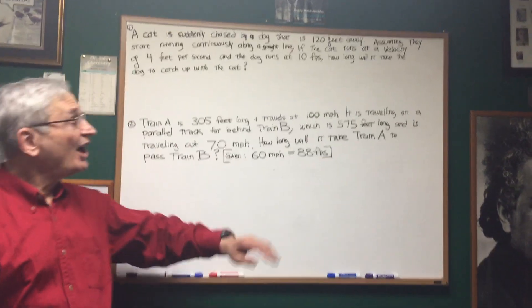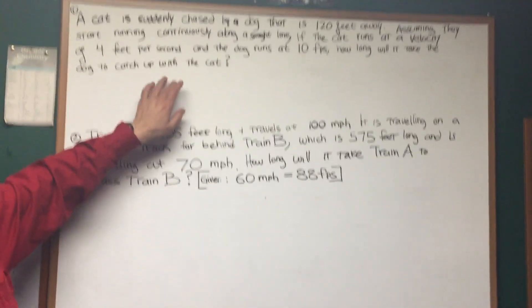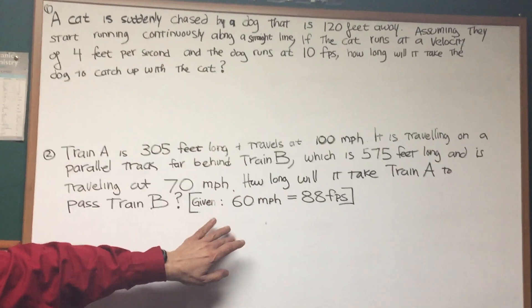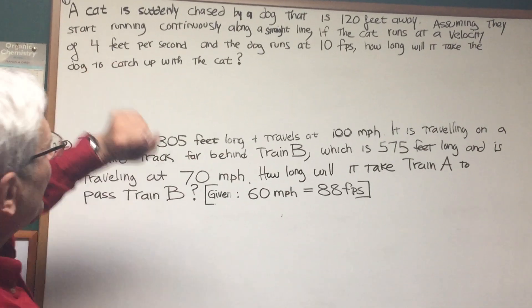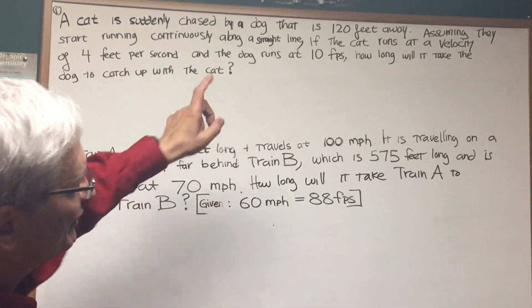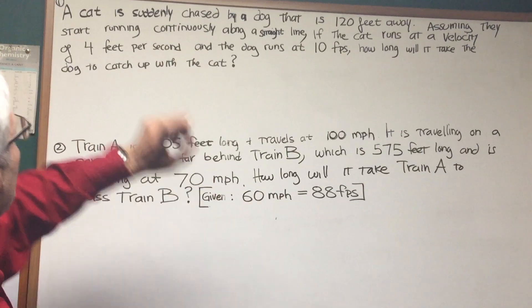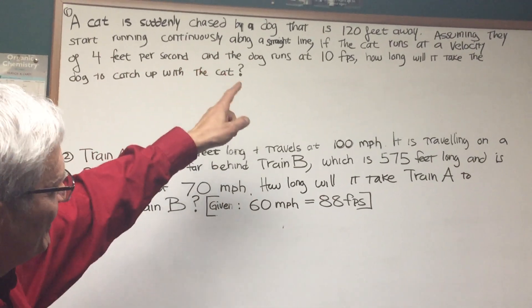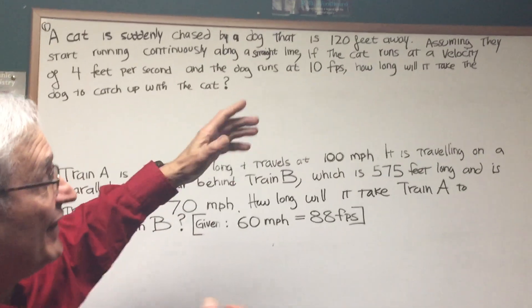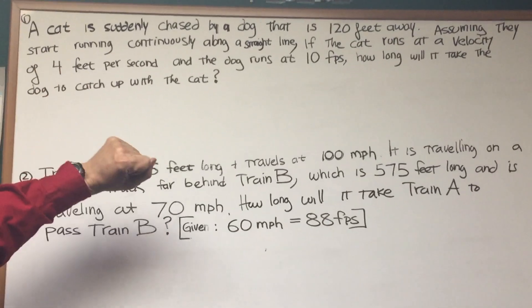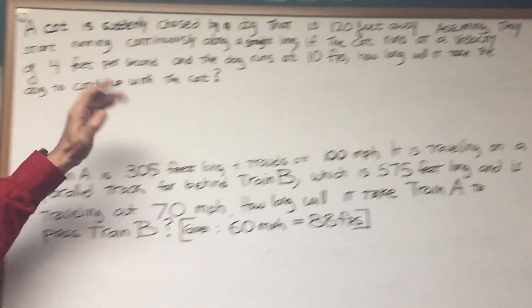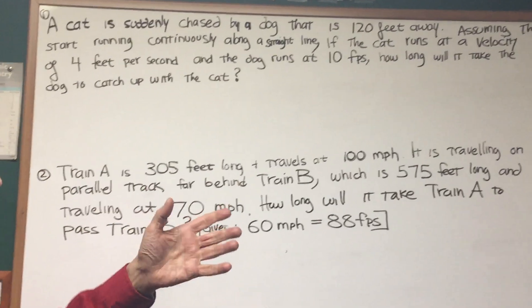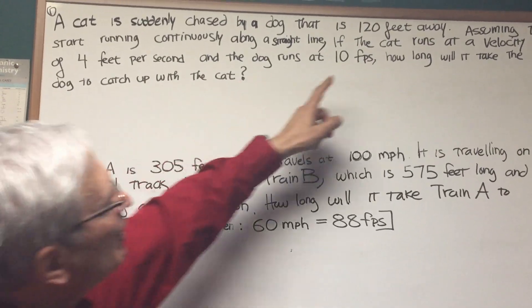We're going to do the first problem, a catch-up problem, and the second problem is a catch-up and passing problem. A cat is suddenly chased by a dog that is 120 feet away. Assuming they start running continuously along a straight line, if the cat runs at 4 feet per second and the dog runs at 10 feet per second, how long will it take the dog to catch up with the cat?